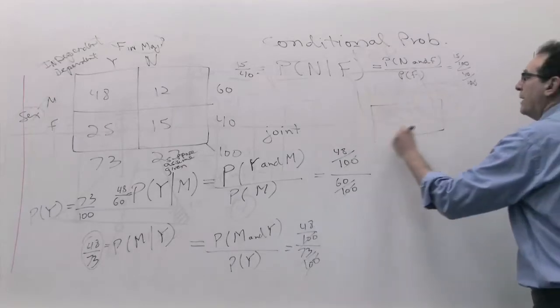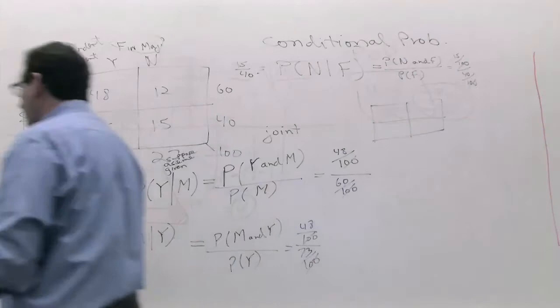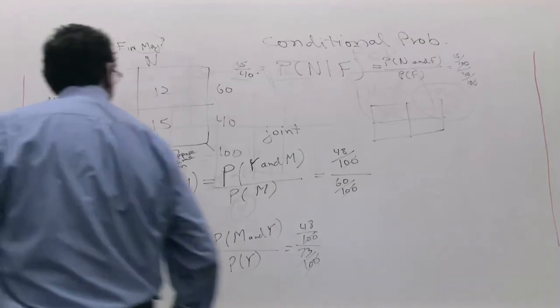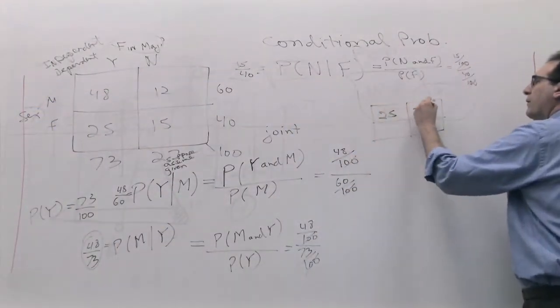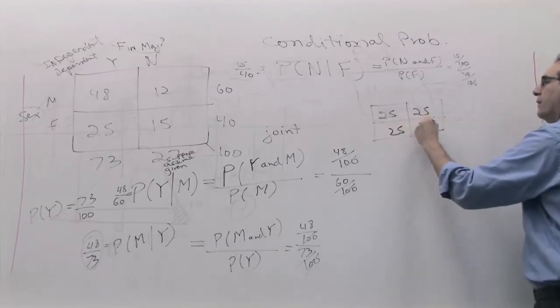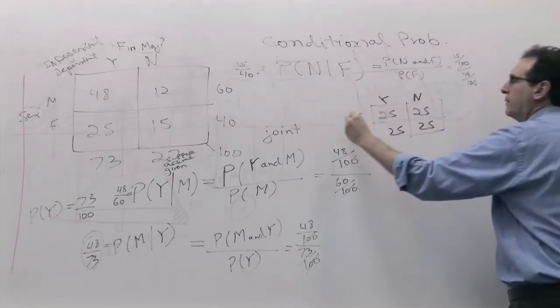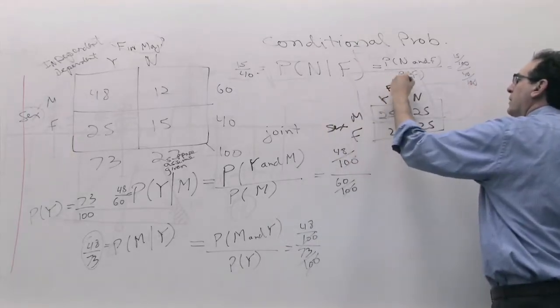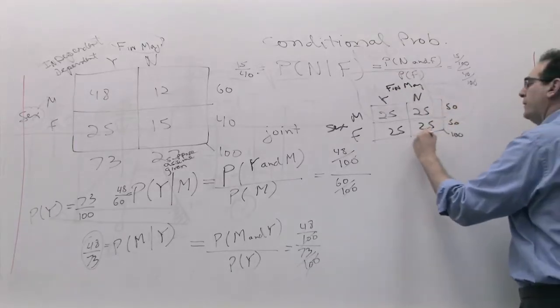Let me say, let's say, for example, I picked, my pen is running out. Let's say I picked 25, 25, 25, 25, male, female, finance major, not finance major, I'm going to put this down as well, sex, finance major, 50, 50, 50, 100, 50, 50.